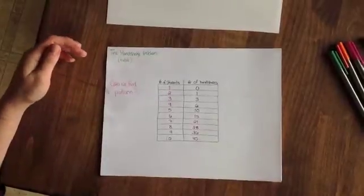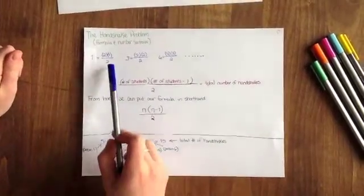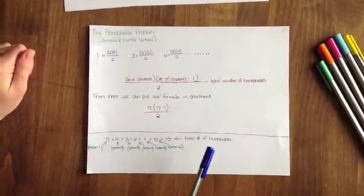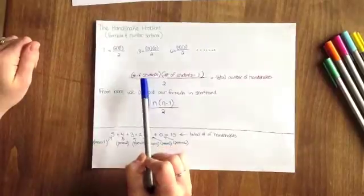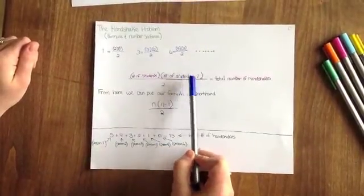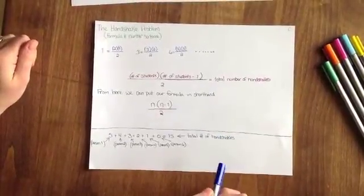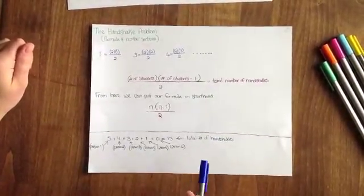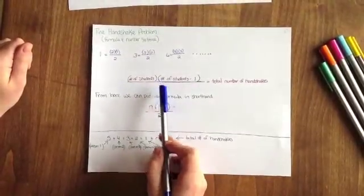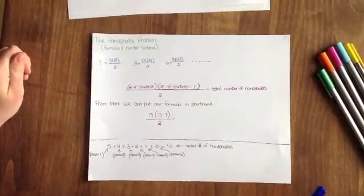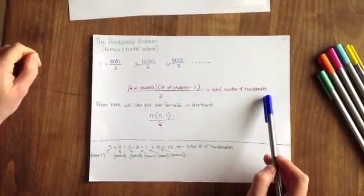Okay, so here's the pattern we found from the previous page. But let's break it apart and understand what it means. We have the number of students multiplied by the number of students minus one. And that's because, if you remember from the first page, the last person doesn't shake anybody else's hands. And then we divide that entire amount by two, because you only shake hands with one of your hands. And that gives us the total number of handshakes we'll have for the whole group.